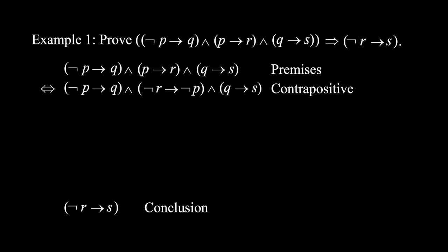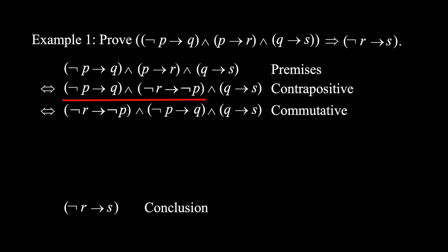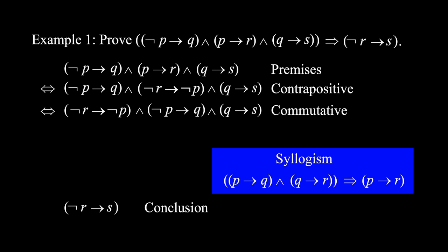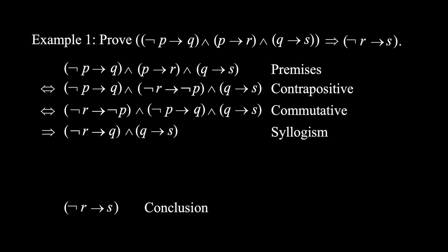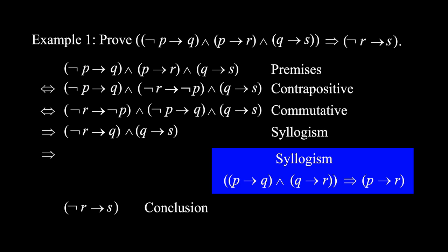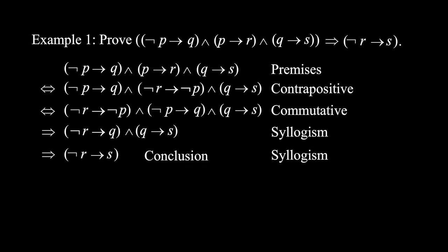This is equivalent to: (not r implies not p), and (not p implies q), and (q implies s). Now we apply the rule of syllogism to the first two implications, giving us: (not r implies q), and (q implies s). We apply syllogism again and get to the conclusion: not r implies s. Now we are done.